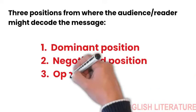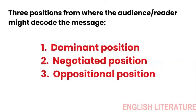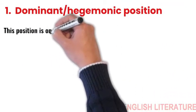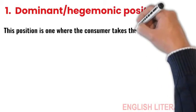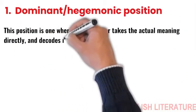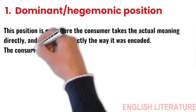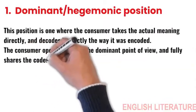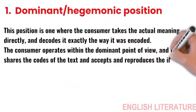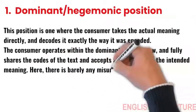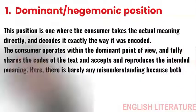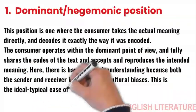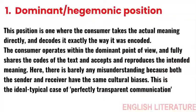Dominant or hegemonic position. This position is one where the consumer takes the actual meaning directly and decodes it exactly the way it is encoded. The consumer operates within the dominant point of view and fully shares the codes of the text and accepts and reproduces the intended meaning. Here, there is barely any misunderstanding because both the sender and receiver have the same cultural biases. This is the ideal typical case of perfectly transparent communication.